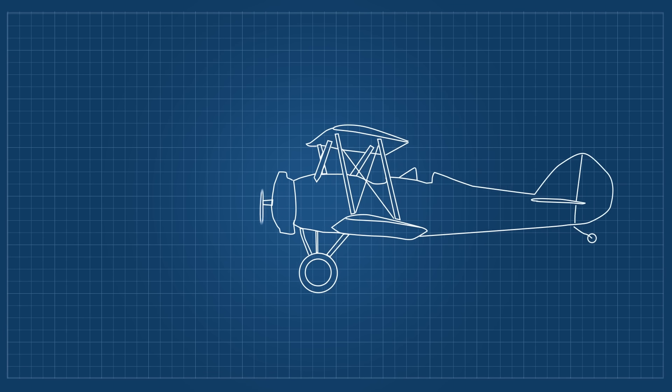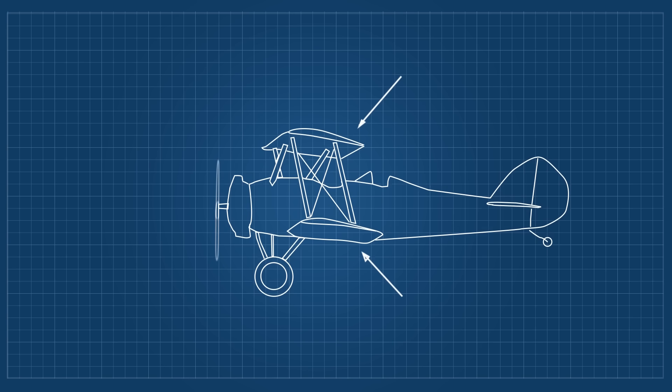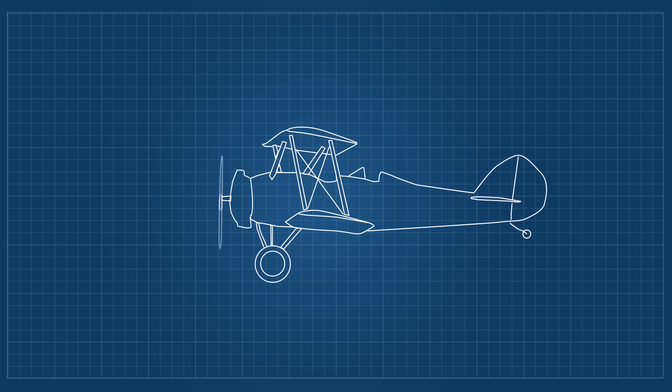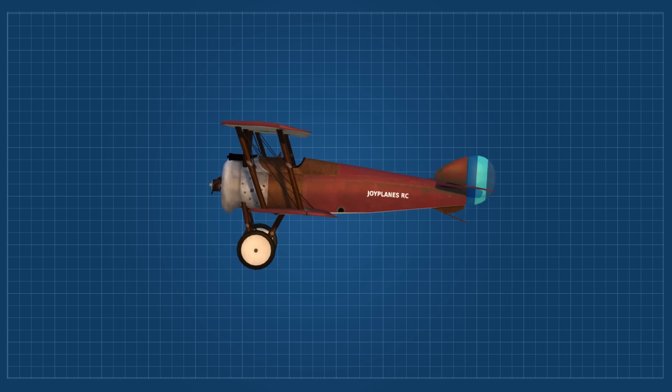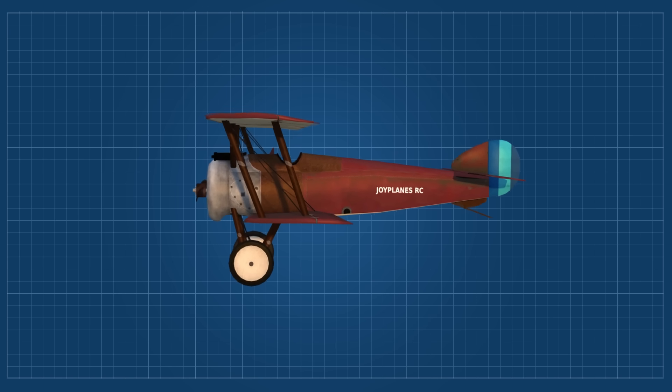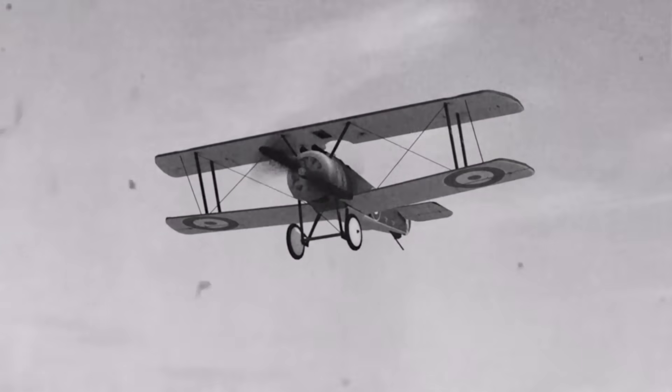We all know what a biplane is, it's a plane with two wings, one above the fuselage and the other below, which is one of the possible configurations in a fixed wing aircraft. But why aren't they so common today, and why were they used in the past? We will answer these and many other questions about biplanes in this video.